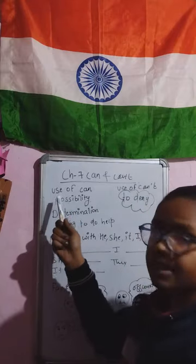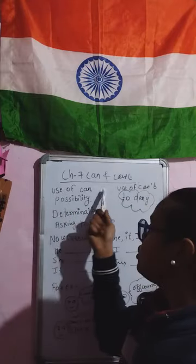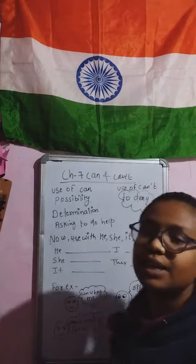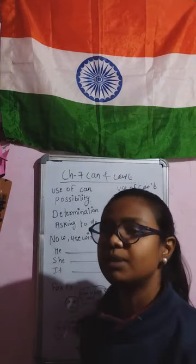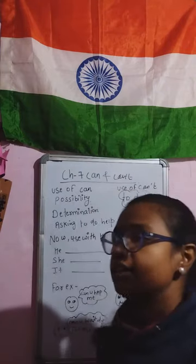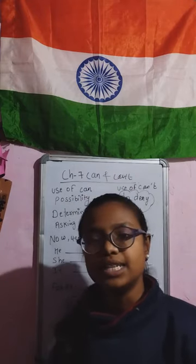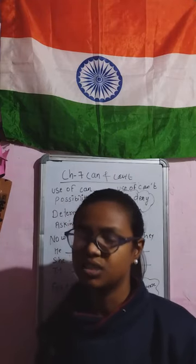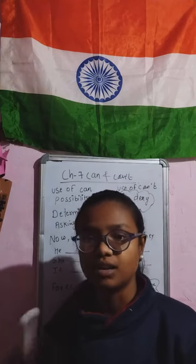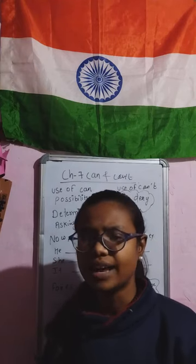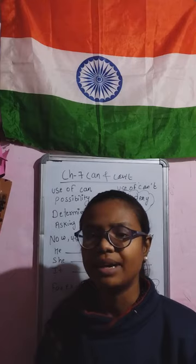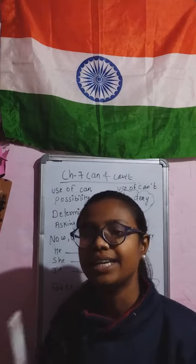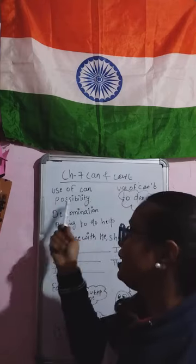The first use of Can written here is Possibility. For example, 'Can I do this?' — here I have a doubt about myself. In Hindi: 'Kya meh kar sakti hoon?' This shows possibility. Another example: 'Can it be rain?' This is also showing possibility.